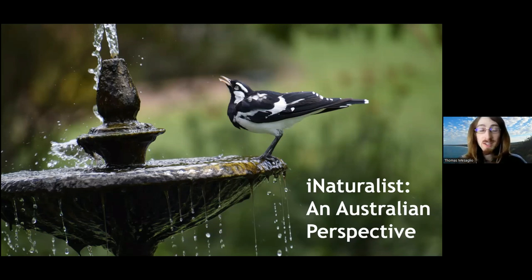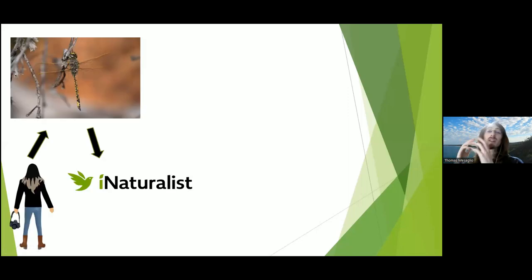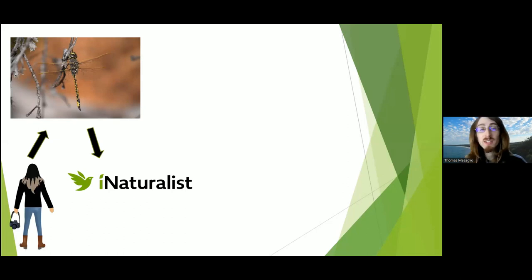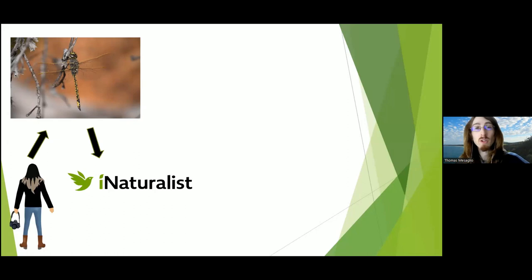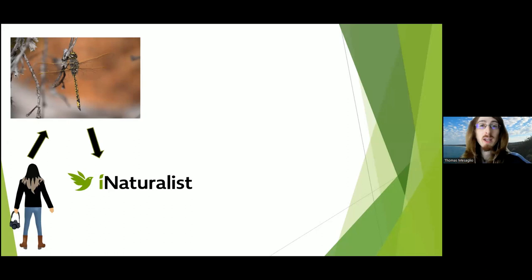So what is iNaturalist? It's an online biodiversity citizen science platform. The basic currency is observations — any interaction between yourself and any living organism at a point in time. Typically observations take the form of photographs, but you can also upload sound recordings. If you hear a frog, a cicada, or a bird and didn't get a photo, you can still record and upload that audio.